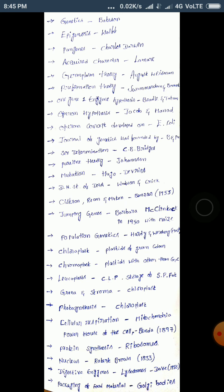The term genetics was founded by Bateson. Scientists like Gregor Johann Mendel worked on heredity. Sex determination was studied by CB Bridges. Johannsen worked on pure lines and mutation. Hugo de Vries worked on mutation theory. Watson and Crick discovered the double helical structure of DNA.